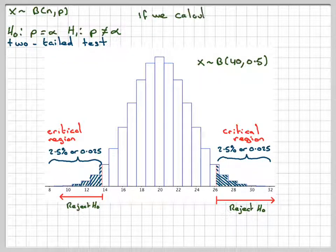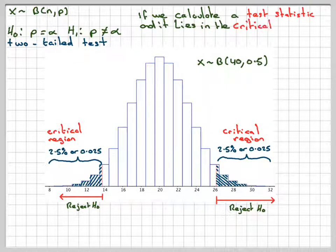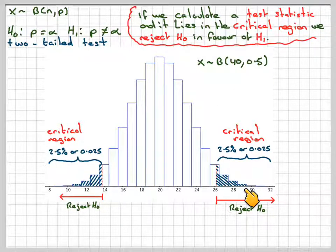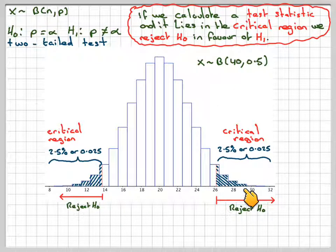This is called the critical region. Again, the same idea. If we calculate a test statistic, and if it lies in the critical region, so if it lies here or here, then I will reject H0 in favor of H1. If it lies somewhere in here, then I accept that H0 is true. This is how it works.